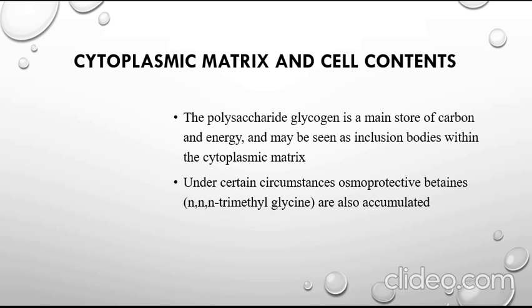The polysaccharide glycogen is a main store of carbon and energy and may be seen as inclusion bodies within the cytoplasmic matrix. Glycogen is used by the cell for various processes. Under certain circumstances, osmoprotective compounds are also accumulated within the cytoplasmic matrix.